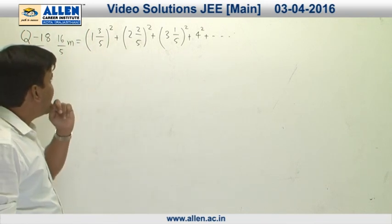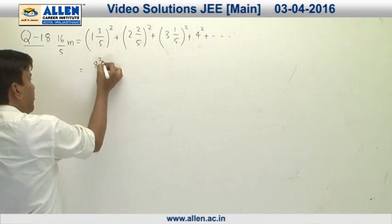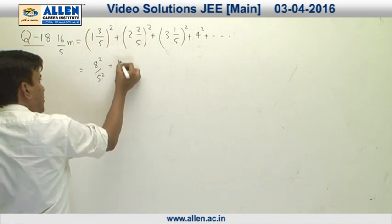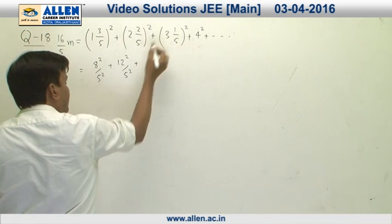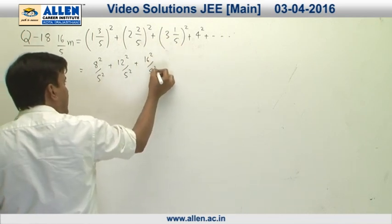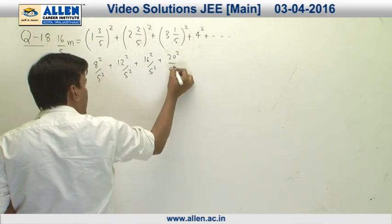If we look upon this series and simplify this, we will get the first term as 8 square upon 5 square. The second is going to be 12 square upon 5 square, then 16 square upon 5 square, and this can also be written as 20 square upon 5 square and so on till 10 terms.